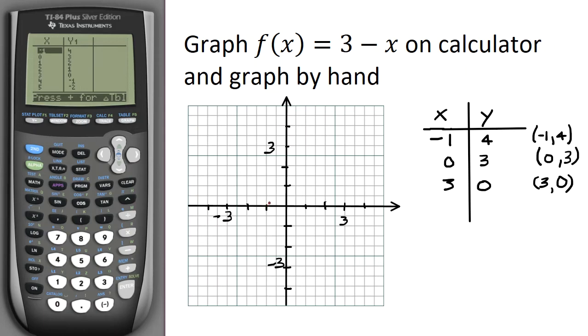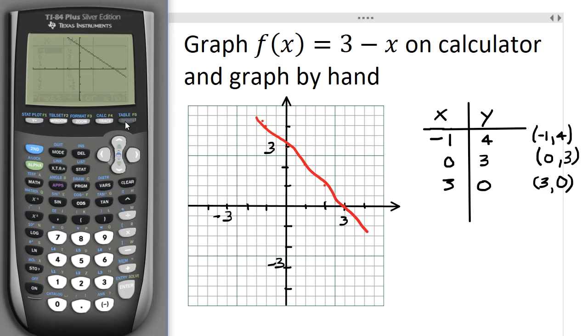So my first point, x is -1, y is 4. x is 0, y is 3. x is 3, y is 0. And if I wanted to be really careful, I could even put some more in. When x is 1, y is 2. When x is 2, y is 1, and you can see that that pretty much lines up. Well, we'll just pretend I can draw a straight line on the computer, and if I hit Graph, I'll see my graph.